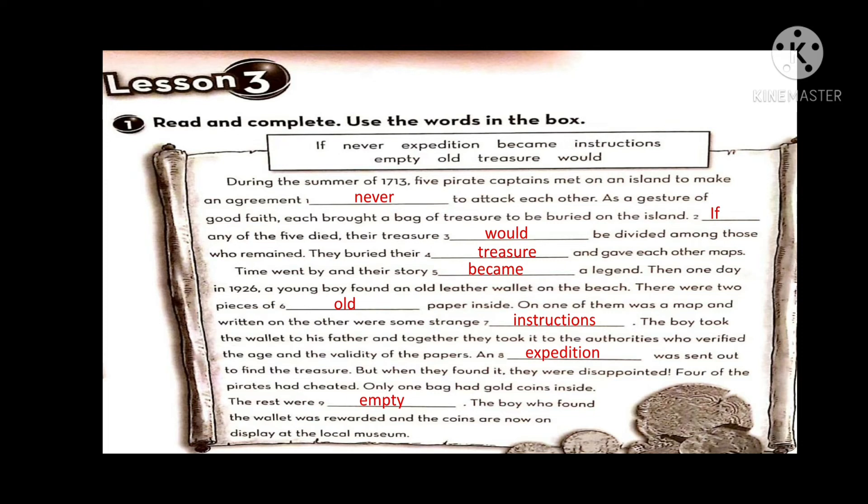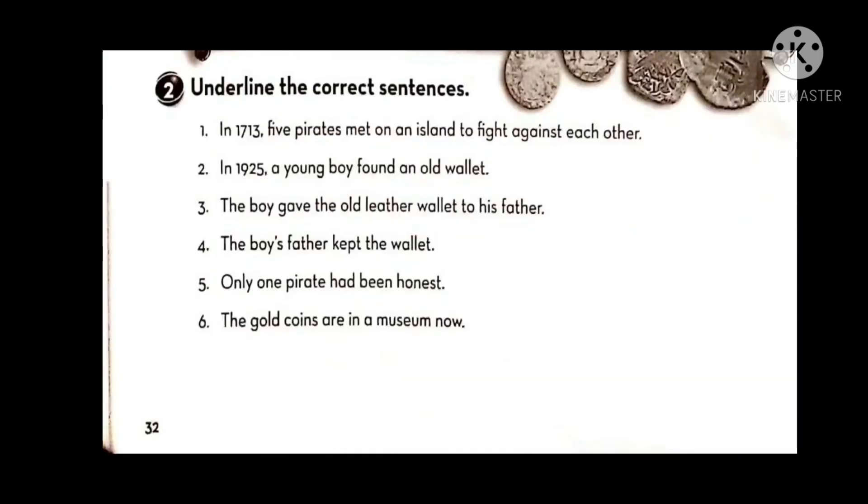Now let's move to exercise number two. We need to read the sentences and underline the correct sentences based on the paragraph we read. Number one: In 1713, five pirates met on an island to fight against each other. This is incorrect because they were on the island to make an agreement never to attack each other, not to fight against each other.